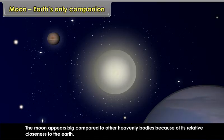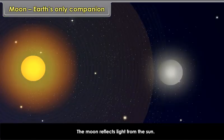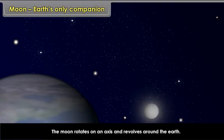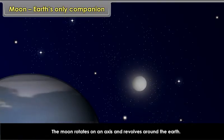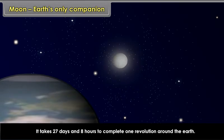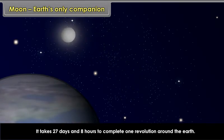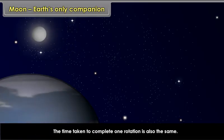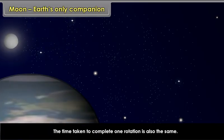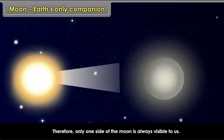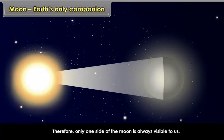The Moon reflects light from the Sun. The Moon rotates on an axis and revolves around the Earth. It takes 27 days and 8 hours to complete one revolution around the Earth. The time taken to complete one rotation is also the same. Therefore, only one side of the Moon is always visible to us.